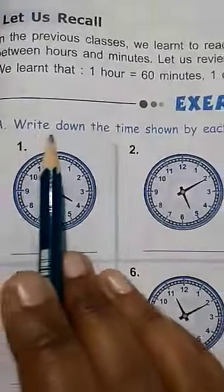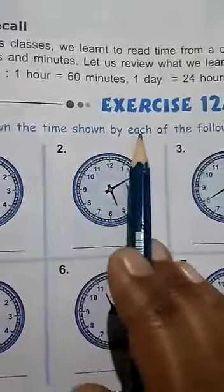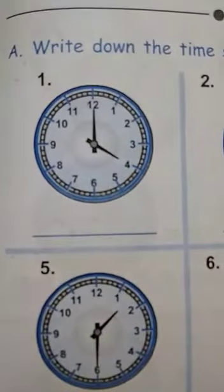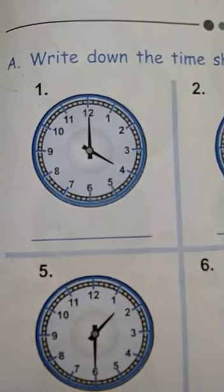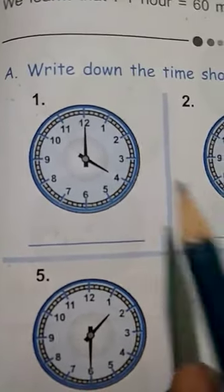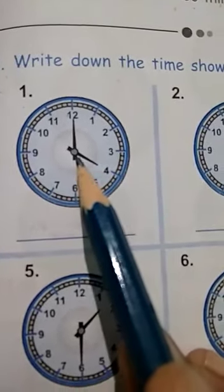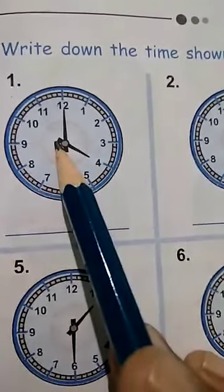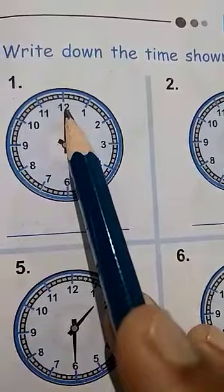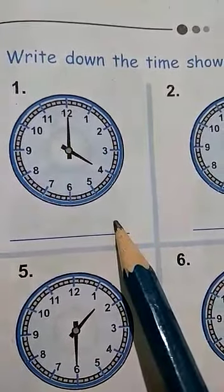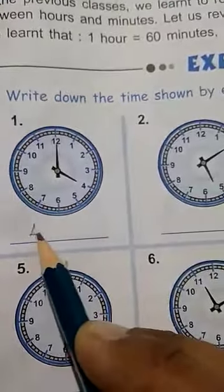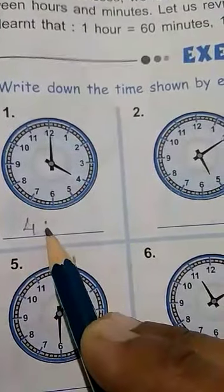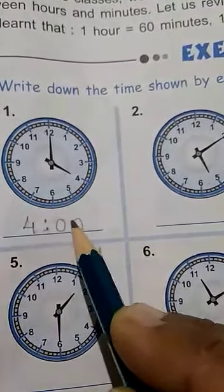Write down the time shown by each of the following clocks. First question, see here the clock drawn in your book. You can see the hour hand is at 4 and the minute hand is at 12. So the time shown in the clock is 4 o'clock. You will write 4 dot 0 0.